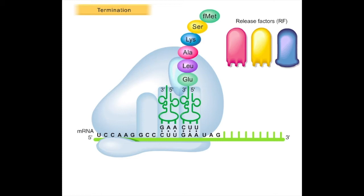RFs read the stop codon and initiate a series of specific termination events. E. coli has three RFs: RF1, RF2, and RF3.